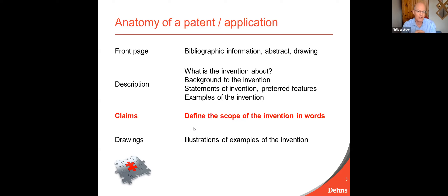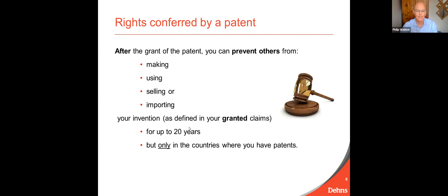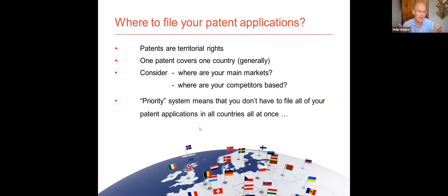So we've made the invention and we've got a patent application — where do we go from there? First of all, before thinking about where to file around the world, you need to remember what rights the grant of a patent will actually give you. Remember that the patent is a negative right — it gives you the right to stop others making, selling, using, or importing your invention in the countries where you've got patents. Patents are territorial rights. If you want protection in the United States, you need an American patent; in Japan, you need a Japanese patent. Generally one patent covers one country, although we'll talk about the European system a bit later.